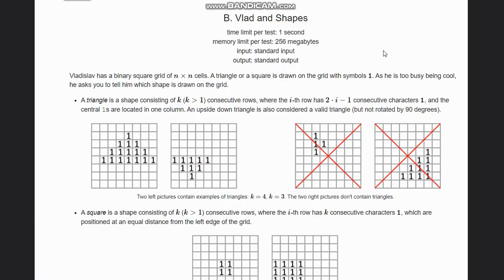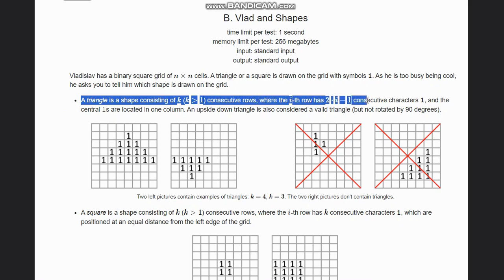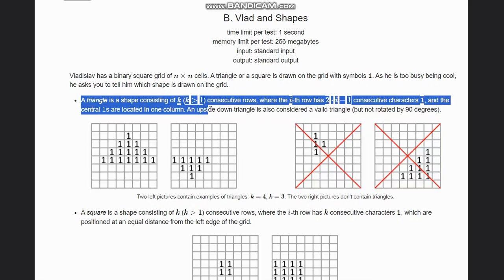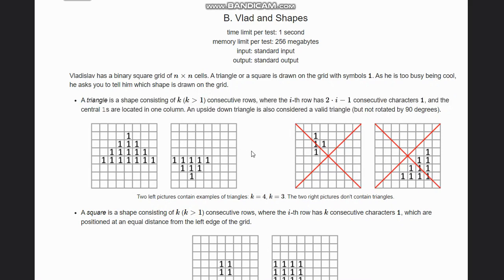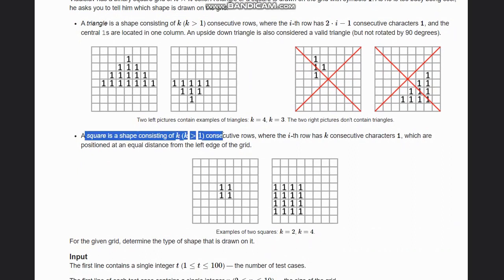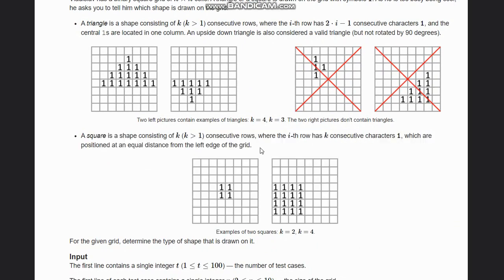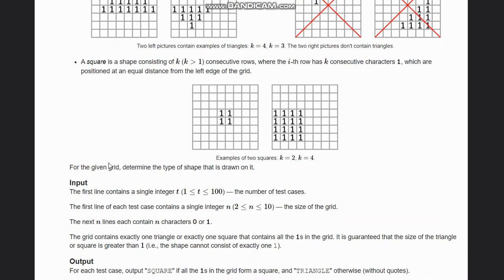Hello everyone, welcome to the channel. The question is 'Vlad and Shapes.' The problem states that Vlad has a binary square grid of n×n cells. A triangle or square is drawn on the grid with symbol ones. A triangle consists of k consecutive rows where the i-th row has 2×i−1 consecutive ones, centered in one column. An upside-down triangle is also considered, but not one rotated by 90 degrees. A square consists of k consecutive rows where each row has k consecutive ones positioned at an equal distance from the left edge.